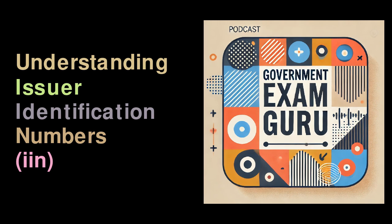Unique Card Numbers and Check Digits: after the IIN, the card number contains a unique string of digits assigned to the individual cardholder. The last digit is known as the Check Digit, which is validated using the Luhn algorithm. This algorithm ensures the accuracy of the number entered during a transaction.